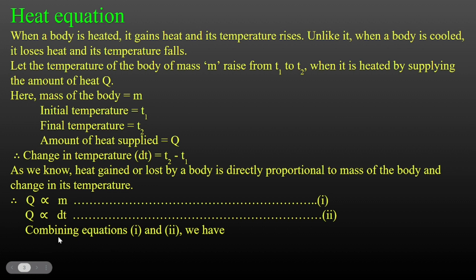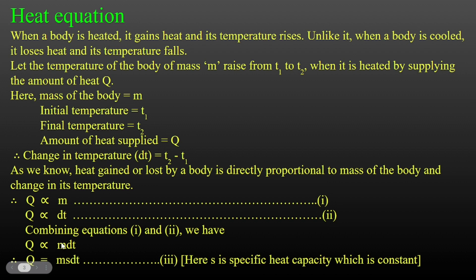Next, we combine equations 1 and 2. Q is proportional to m, and Q is proportional to dt. Combining these, Q is proportional to m times dt. Introducing the proportionality constant, therefore Q equals m times s times dt, where s is the specific heat capacity, which is the constant.